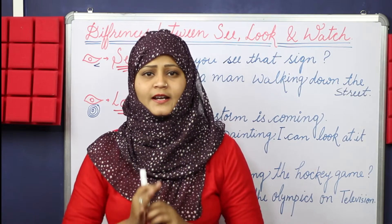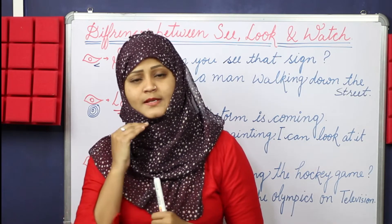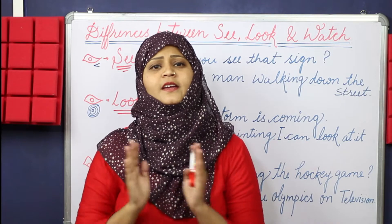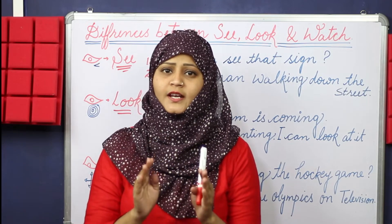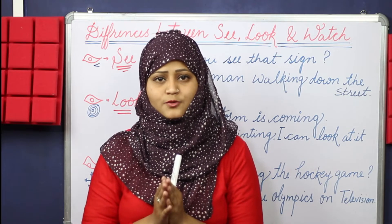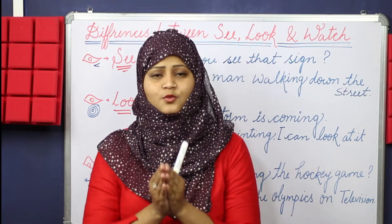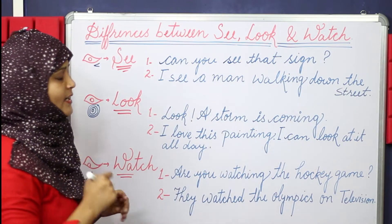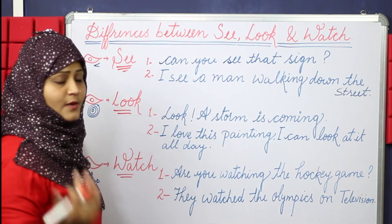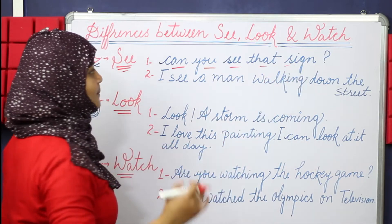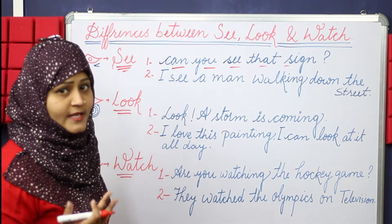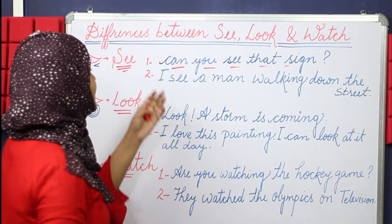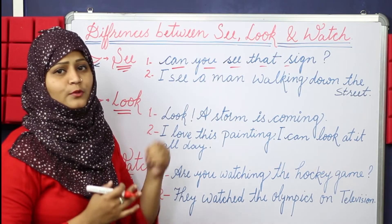Suppose you are traveling, sitting on a bus, and you are looking at things in a natural way — you are not thinking about them. So you can use 'see' in that place. For example: 'Can you see that sign?' The sign is there naturally and you are looking at it. Another example: 'I see a man walking down the street' — the man is walking naturally and you are noticing it.